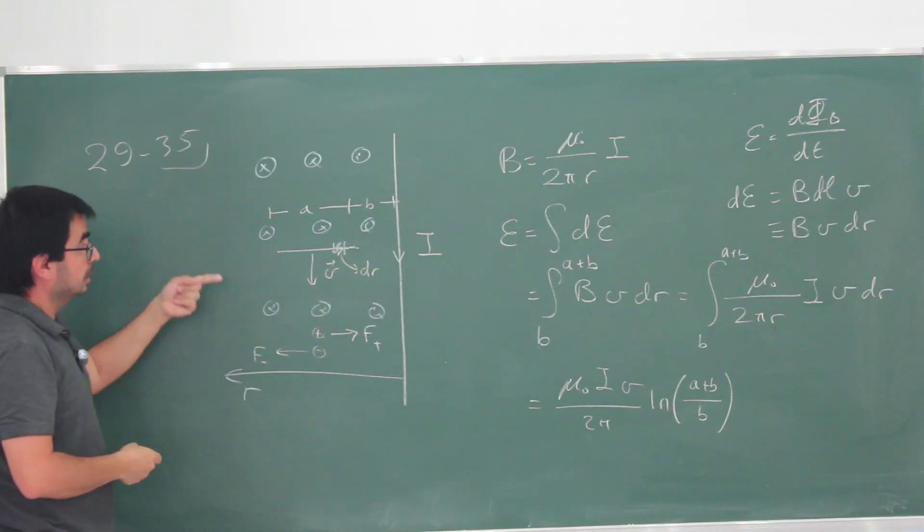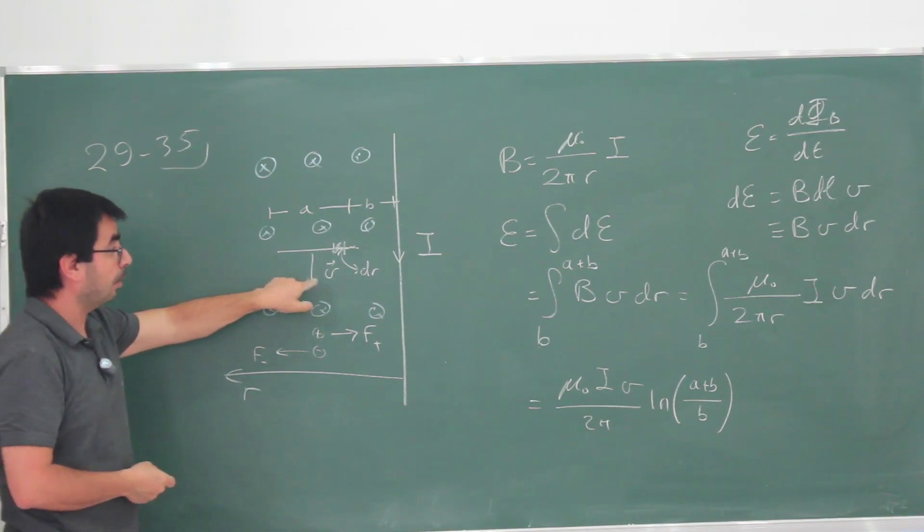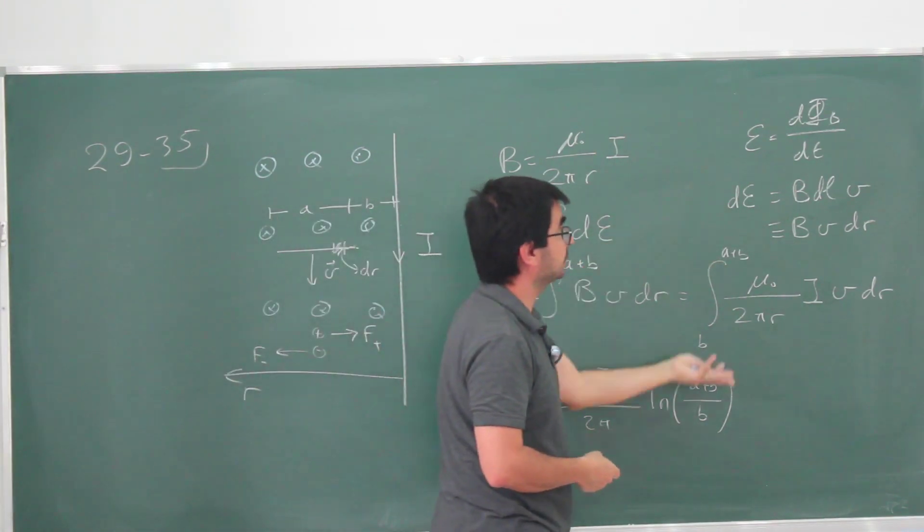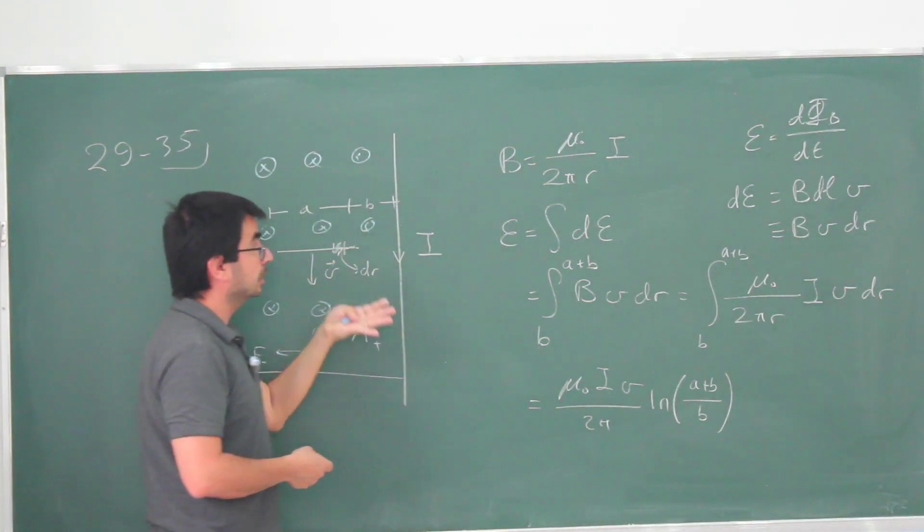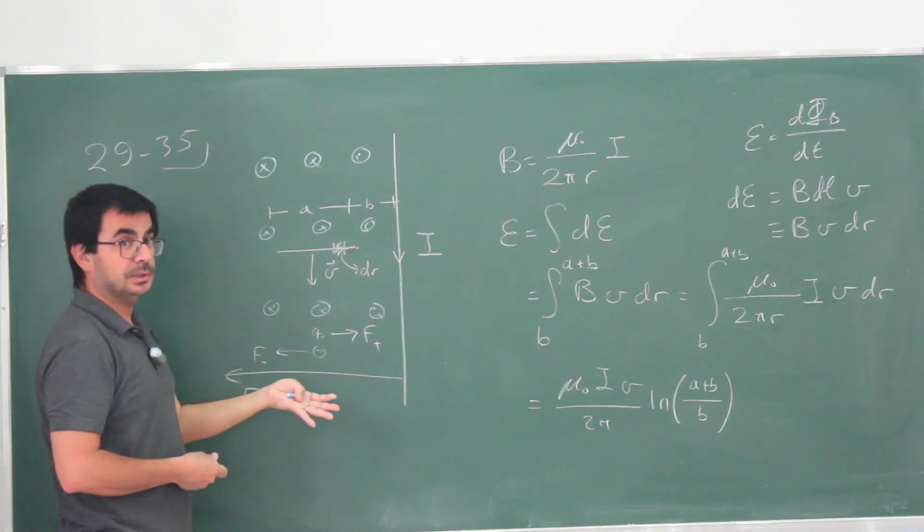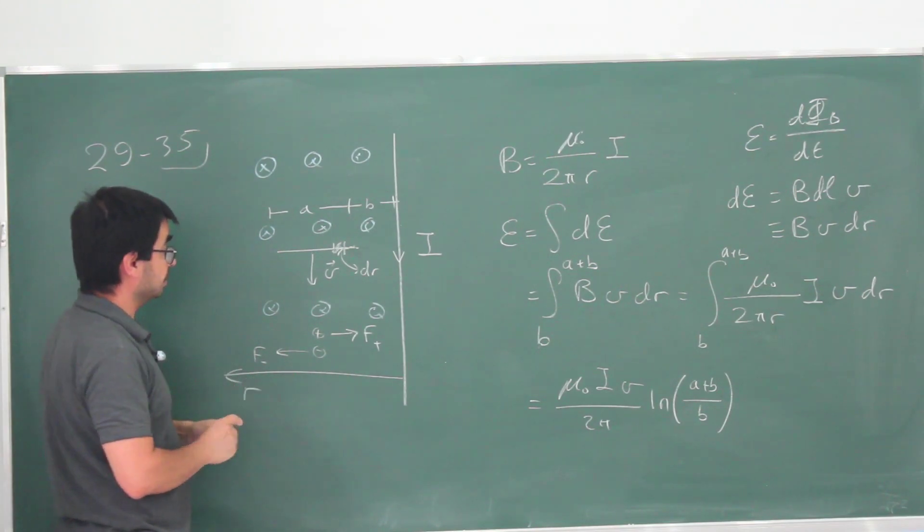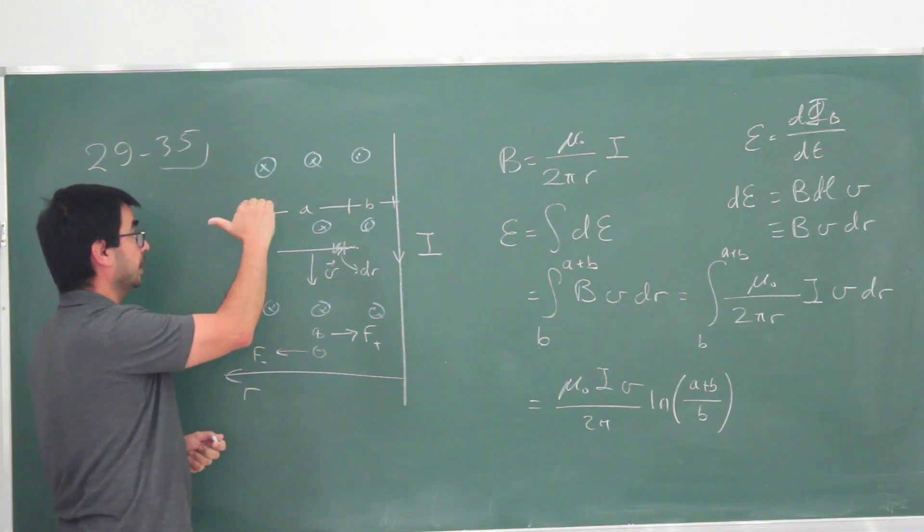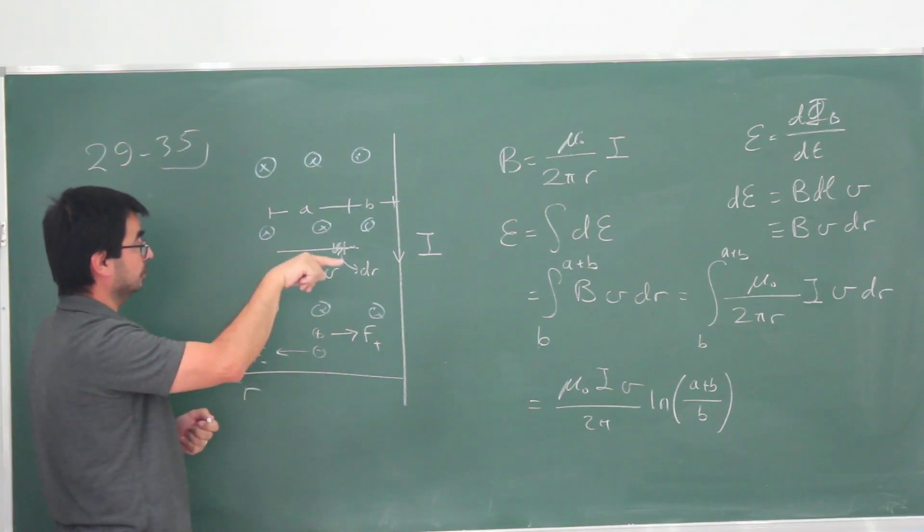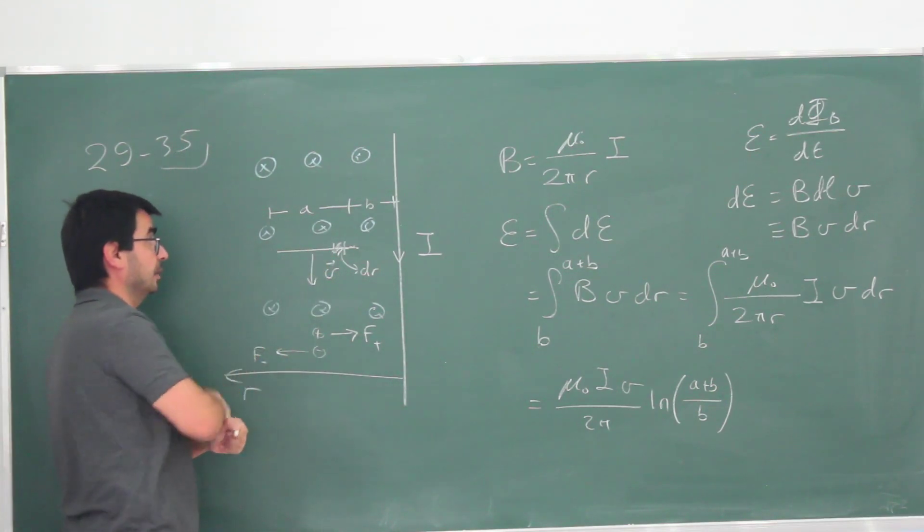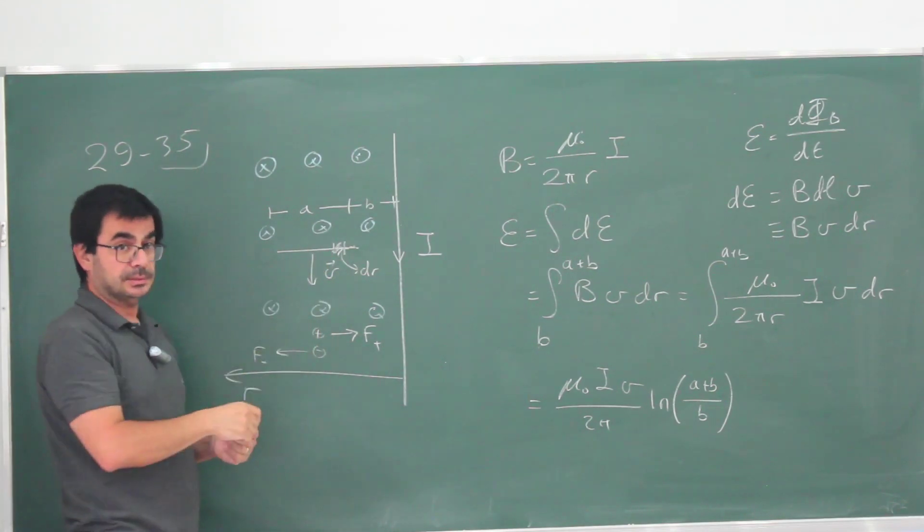What happens if we reverse the velocity for part B? All the arguments here remain the same essentially. The numerical value of EMF is going to be the same. Are we going to switch the direction of the EMF? Yes. Because now they are going this way and the Lorentz force on the positive charges is going to be to the left, and the Lorentz force on the negative charges is going to be to the right. We're going to have a larger EMF on the left-hand side than the right-hand side.